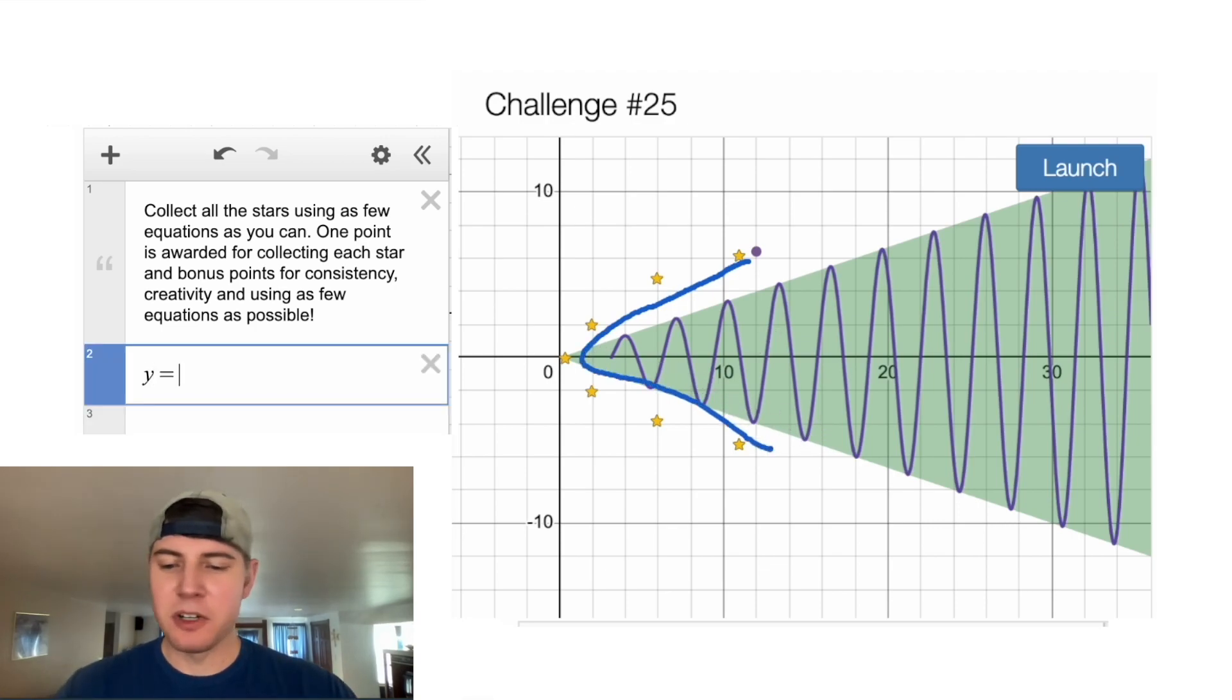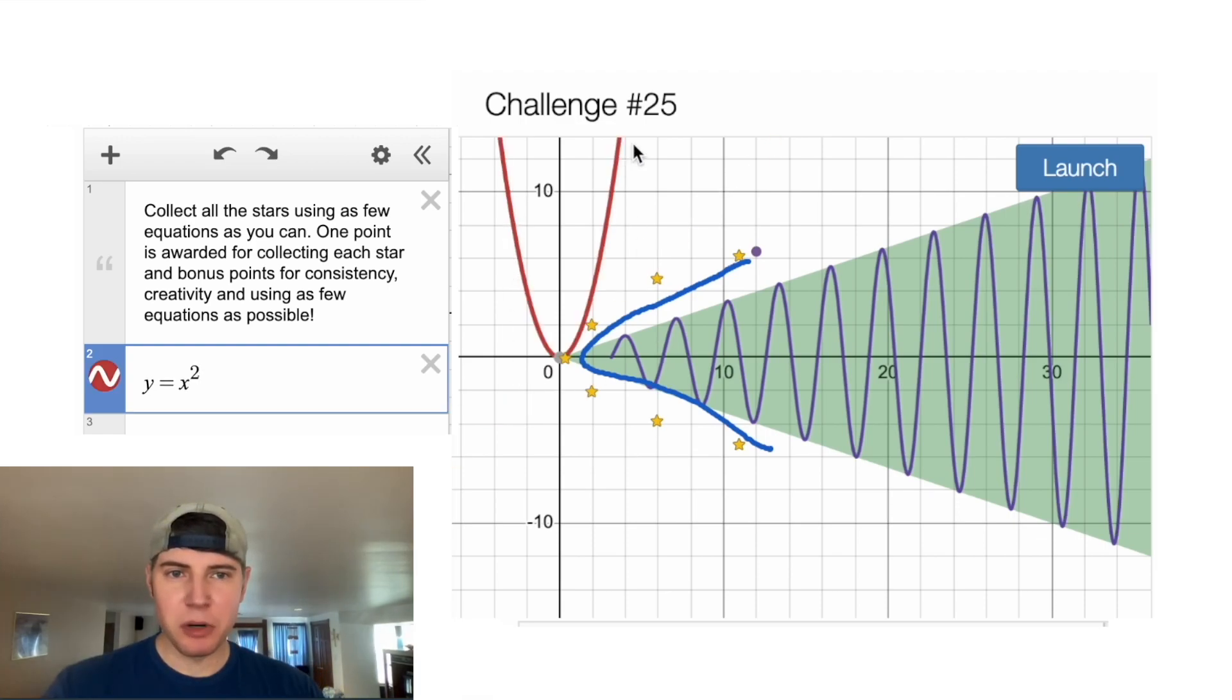When we're working with parabolas as functions, we'd have y equals x squared, and it's going upwards like this. But we want to turn this parabola on its side, so we're going to make it x equals y squared.